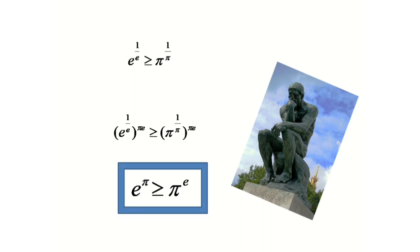we will get e to the power 1 by e to the power pi e is greater than pi to the power 1 by pi to the power pi e. If we simplify this, we will get e to the power pi is greater than or equals to pi to the power e.